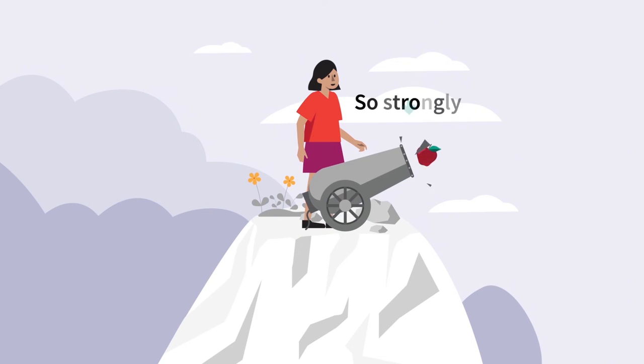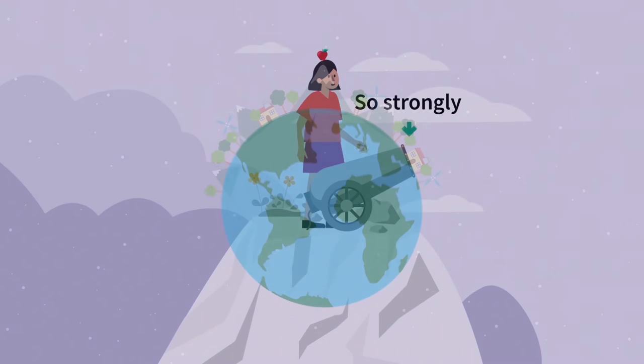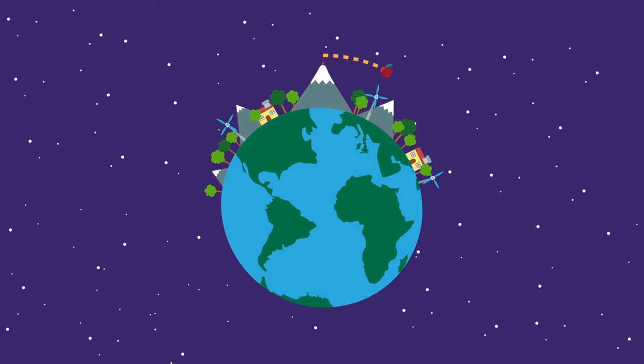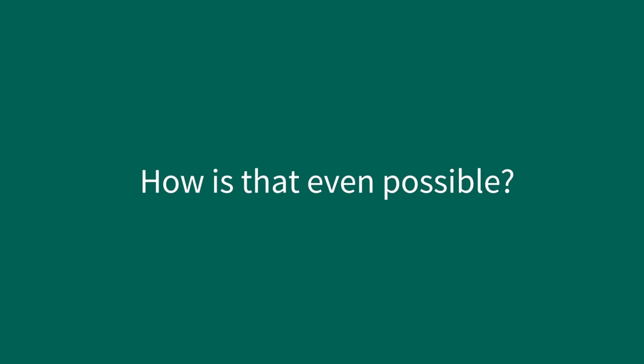Now, what about if you launch the apple so strongly that it escapes the Earth's atmosphere? What will happen to it? The apple will revolve around the Earth. How is that even possible?